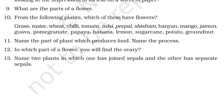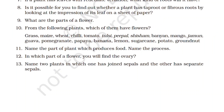From the following plants, which of them have flowers? The list includes grass, maize, wheat, chili, tomato, tulsi, people, shisham, banyan, mango, jamun, guava, pomegranate, papaya, banana, lemon, sugarcane, potato, and groundnut. Almost all of them have flowers. Even grass has small soft green flowers. So almost all the plants in this list have flowers, though there are also many non-flowering plants in the world.